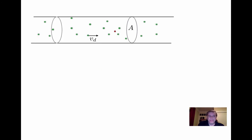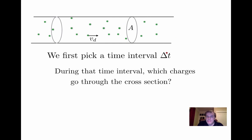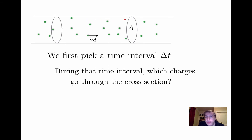First, you pick a time interval delta t — it could be one microsecond or five seconds, you just fix delta t. Then during that delta t, which charges will go through the cross-section? All the charges are moving to the right. A charge that is close to the cross-section will, in that time, have time to go through. But if you go too far back, a charge there in that time won't have time to reach the surface. So for a given delta t, there's just a certain number of free charges that will make it through the cross-section. Those that are too far won't have time to get there.